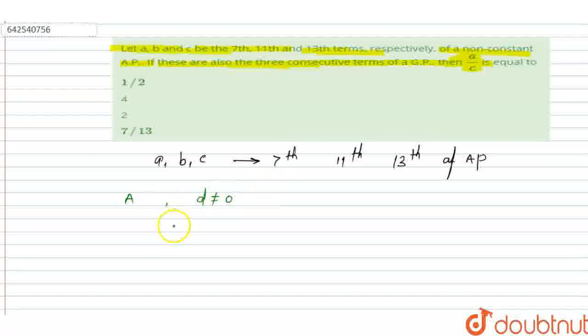Then we can say that a can be written as A plus 6d. Similarly, b can be written as A plus 10d, and c can be written as A plus 12d.